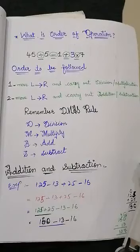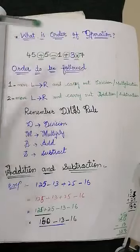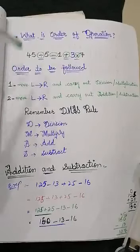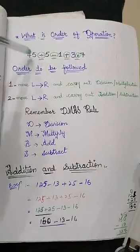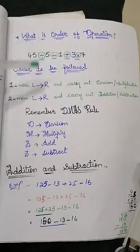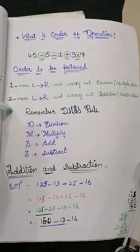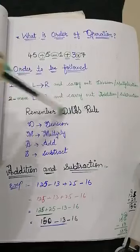Now, what is the order of operations? The given example is: 45 divided by 5, minus 1, plus 3, multiplied by 7. Here, the division, subtraction, addition, and multiplication signs are called arithmetic operations. The order to be followed: first, move left to right and carry out division and multiplication. In the second step, move left to right and carry out addition and subtraction.